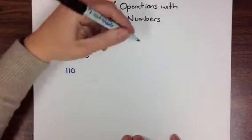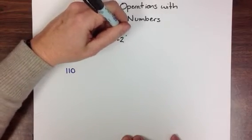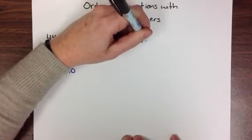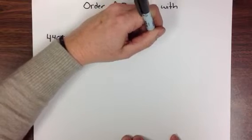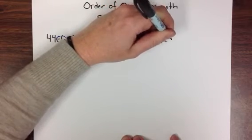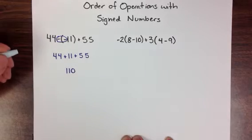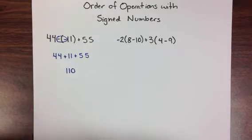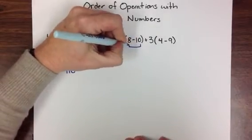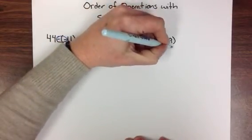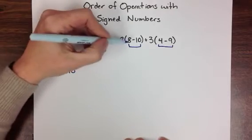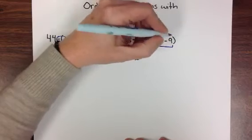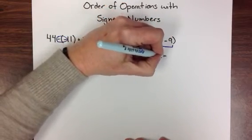The second problem is negative 2 times the quantity 8 minus 10, plus 3 times the quantity 4 minus 9. Order of operations says we need to start with the parentheses first. So 8 minus 10 gives me negative 2, and 4 minus 9 gives me negative 5.